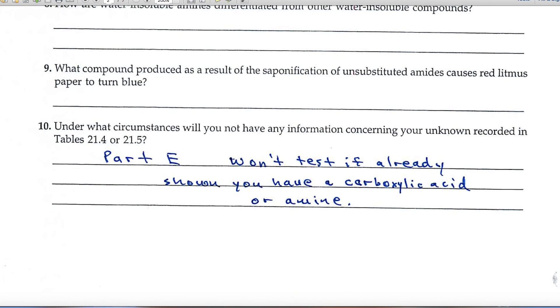And number 10 is maybe the one that would cause you a little difficulty. Under what circumstances will you not have any information concerning your unknown recorded in those two tables? Well, those two tables are in Part E, and you won't test in Part E if you've already shown that you have a carboxylic acid or an amine.